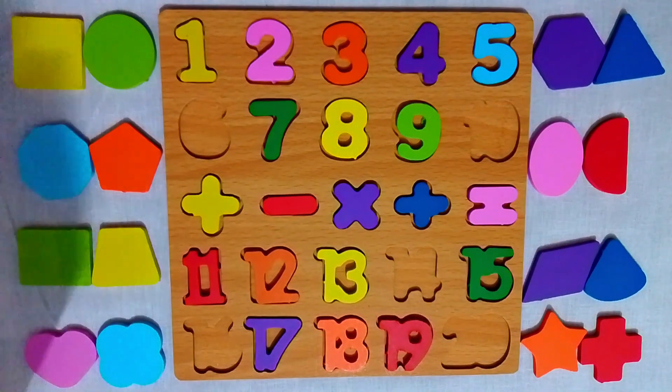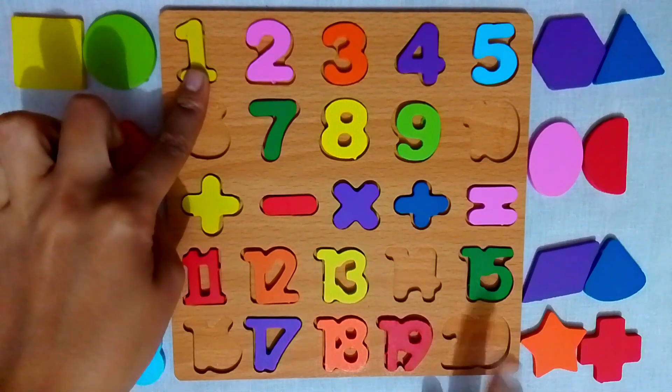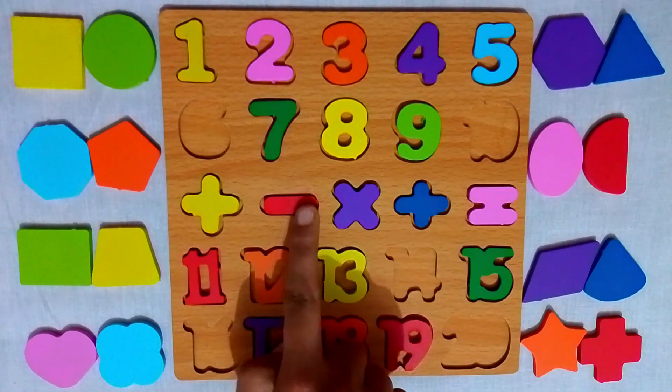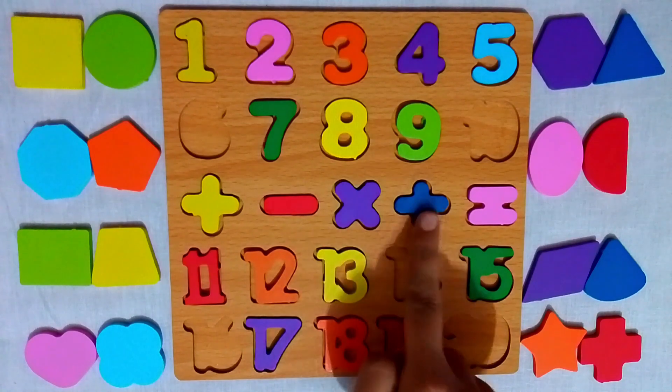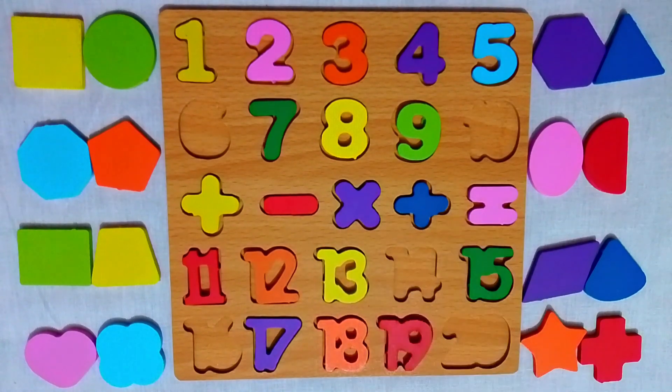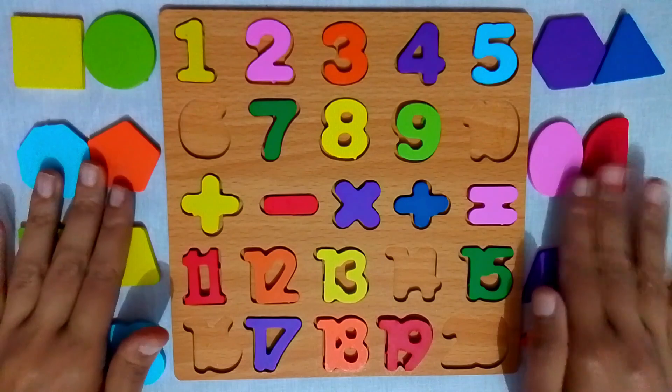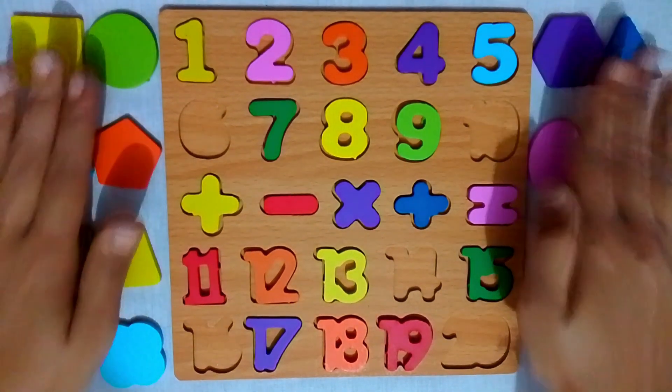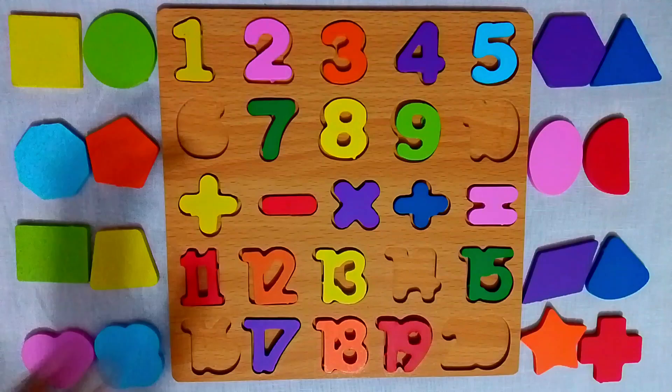Look here, we have numbers from 1 all the way to 20, and also some special signs: plus, minus, multiply, divide, and equal. And we have so many colorful shapes: circle, square, triangle, star, heart, and more. Let's count first.